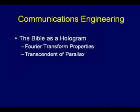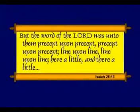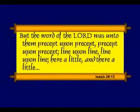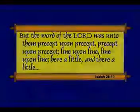The Bible is a hologram. It has Fourier transform properties. It's transcendent — any parallax. And that's exactly what Isaiah says. Isaiah 28 says, 'The word of the Lord was unto them precept upon precept, precept upon precept, line upon line, line upon line, here a little, there a little.' What's he saying? The message of God in the Bible is spread throughout the entire Bible.